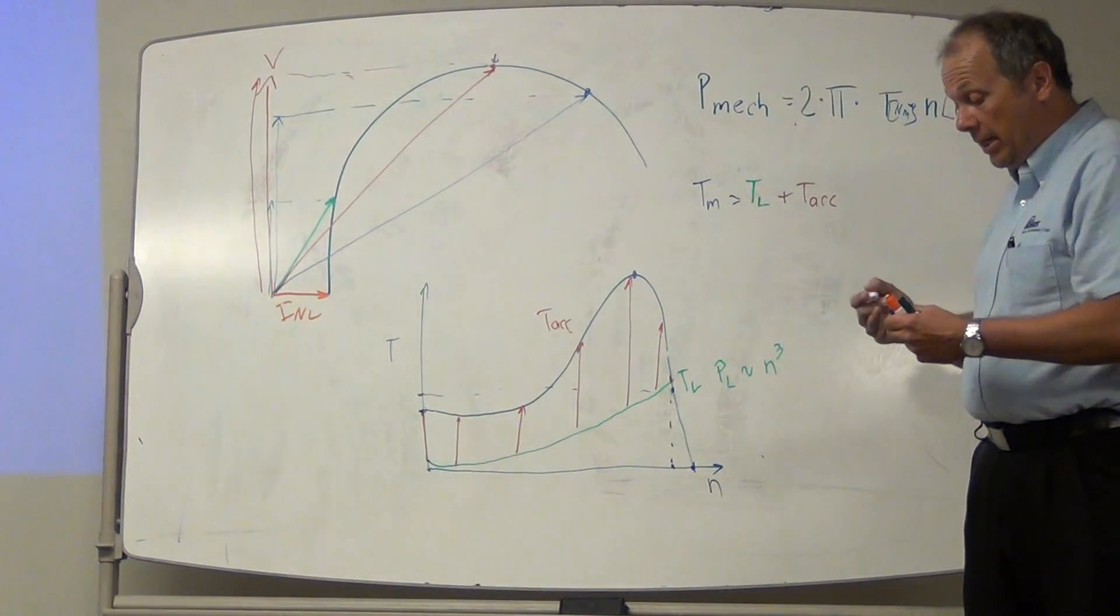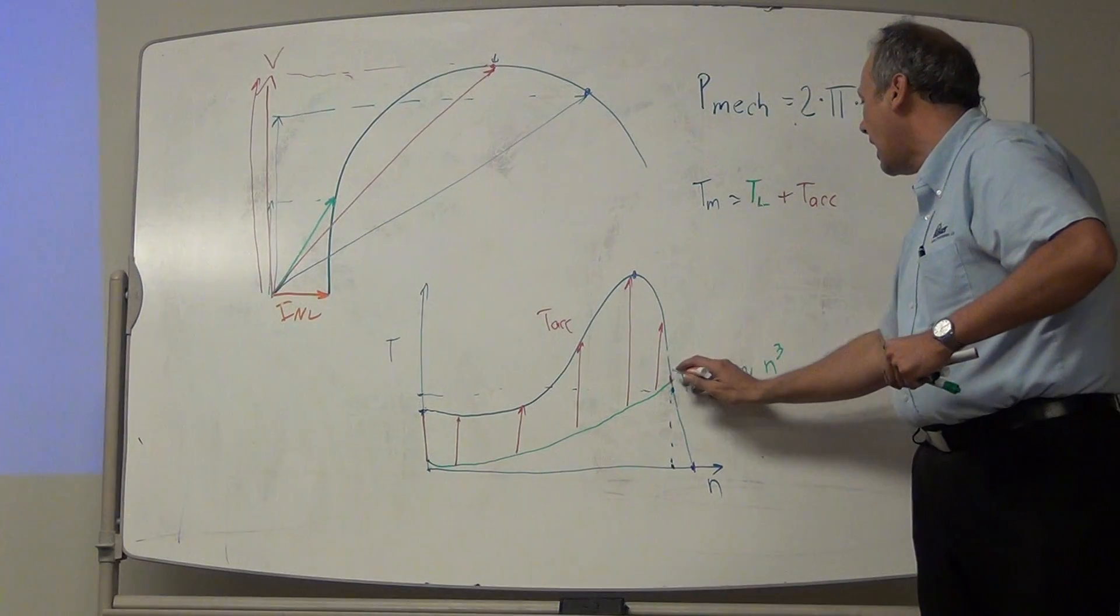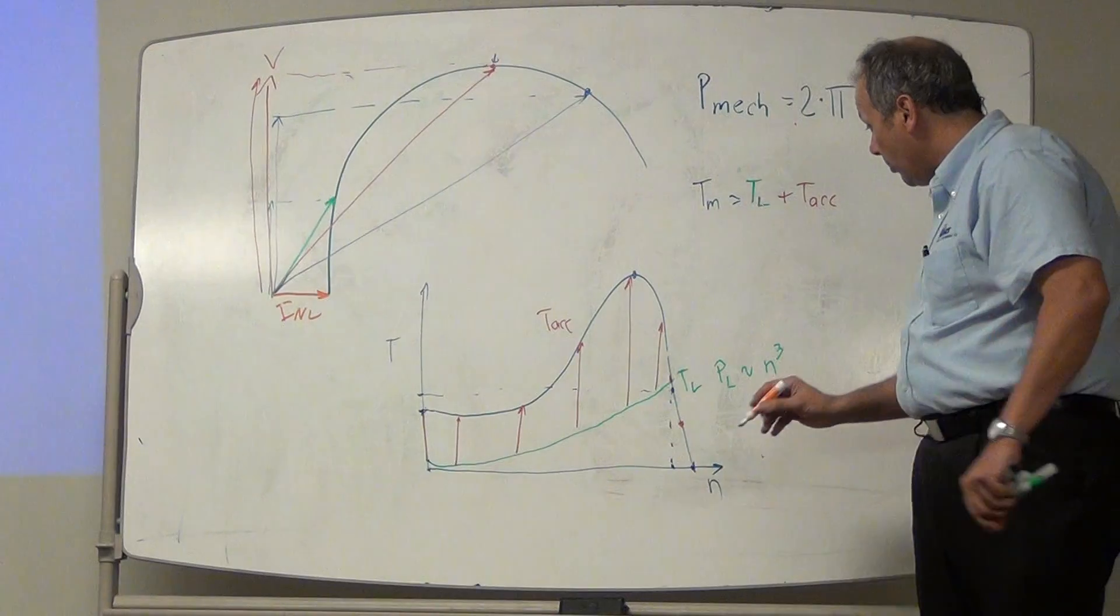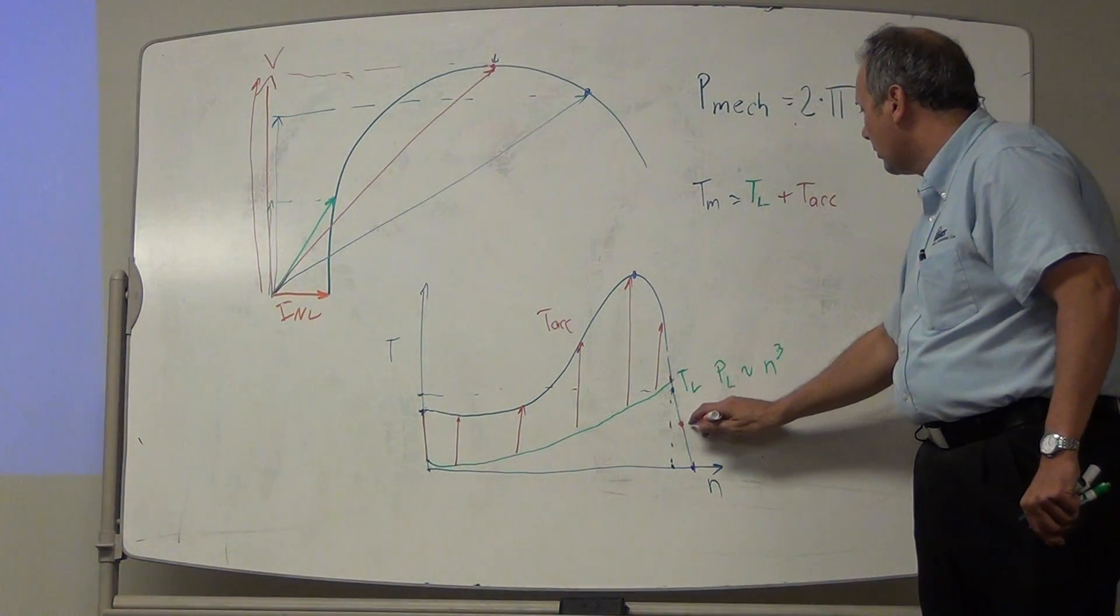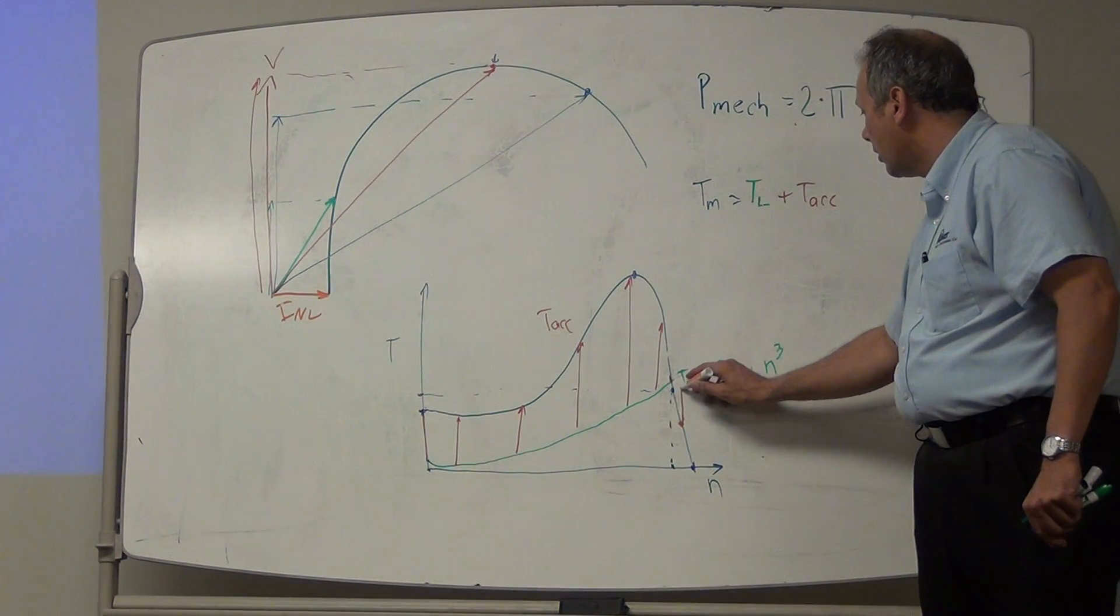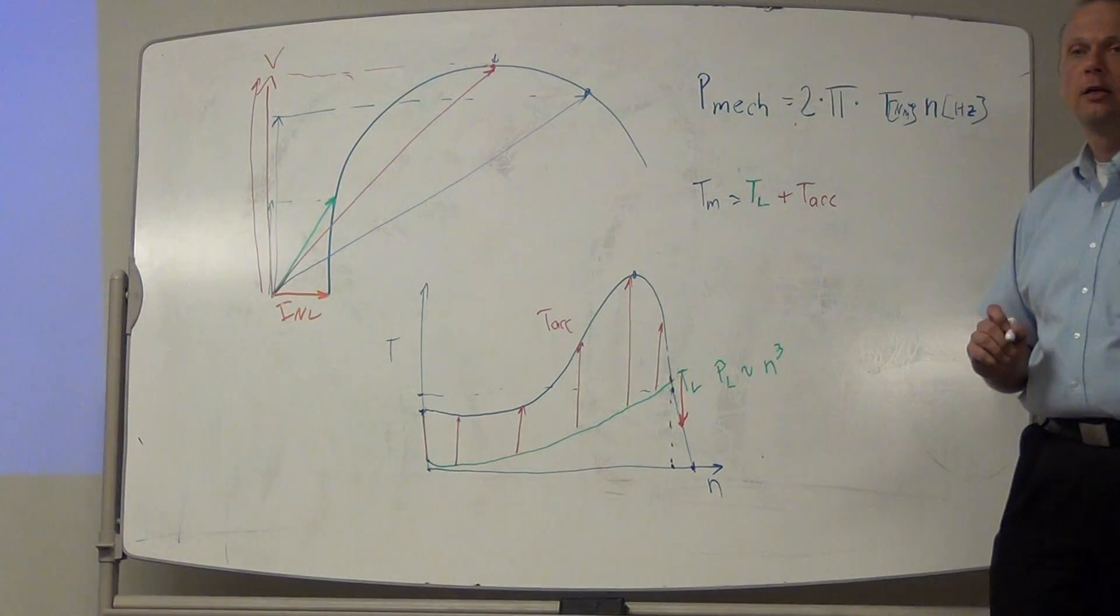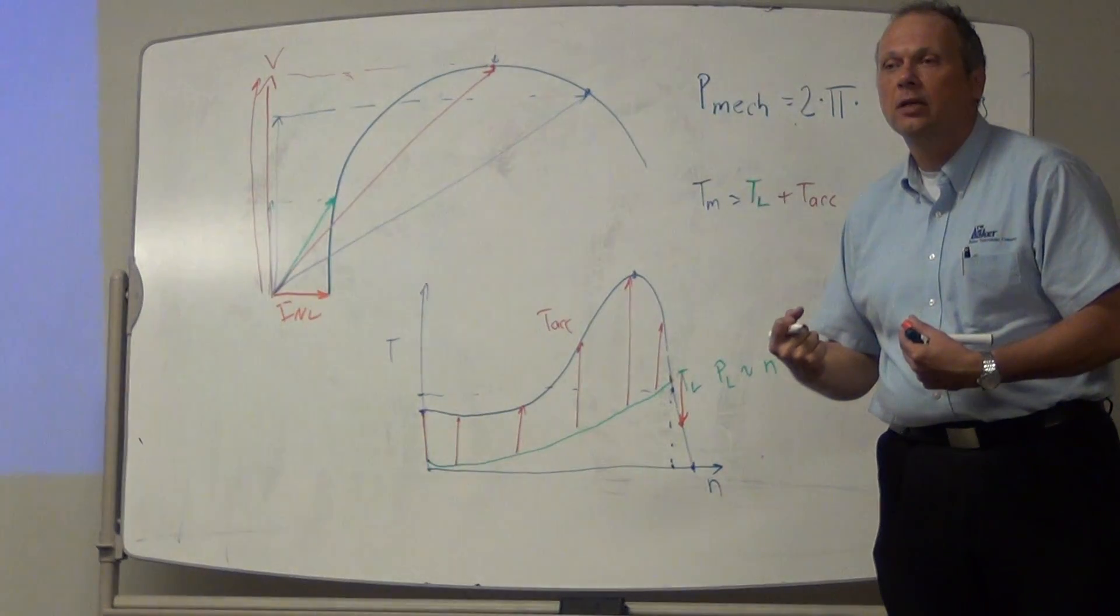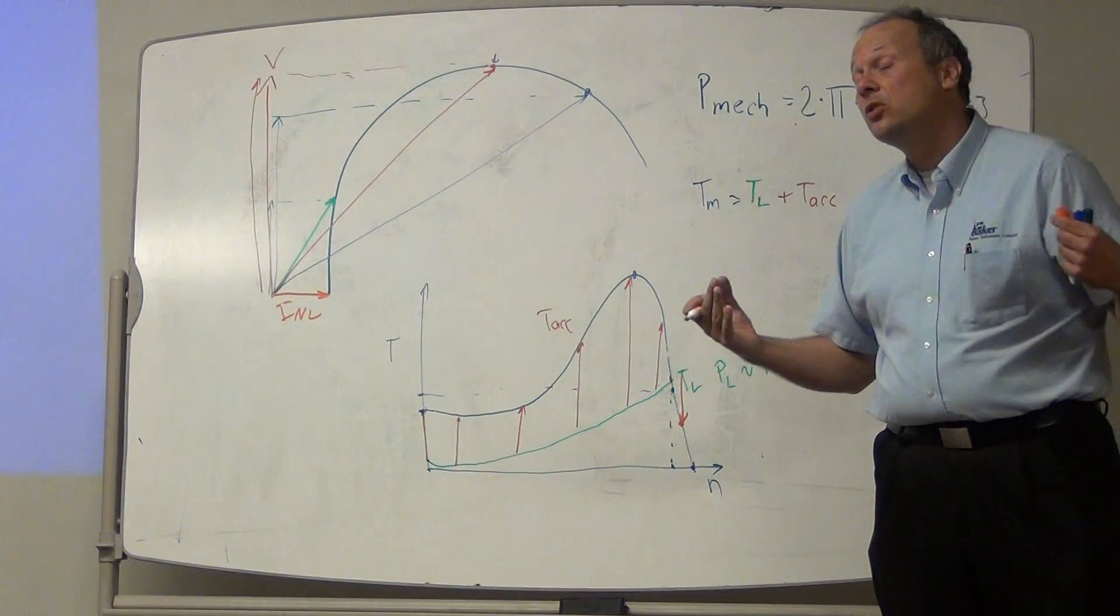If for whatever reason, the motor is spinning at a speed that is higher than this point right here, if the motor is spinning at this speed, what's happening? Well, T motor is down here, the green line is up there, now I'm having an acceleration that goes in the opposite direction. That means that I'm not accelerating, the load is demanding more than what the motor can give, so the load is going to slow down the motor.